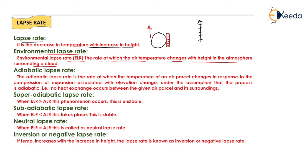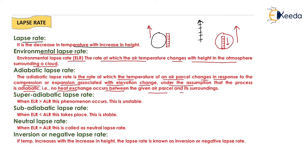Now, what is adiabatic lapse rate? Suppose we fill a balloon with hot gases and keep a thermometer inside to measure the decrease in temperature inside that hot air balloon. We send this balloon into the atmosphere, and with the increase in altitude, the decrease in temperature inside the balloon is measured. The adiabatic lapse rate is the rate at which the temperature of an air parcel changes in response to compression or expansion associated with elevation change, under the assumption that no heat exchange occurs between the air parcel and its surroundings.